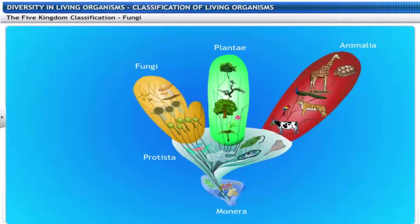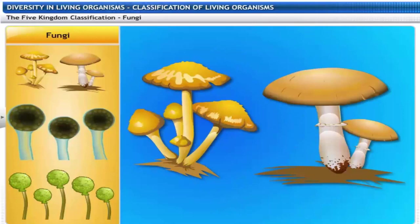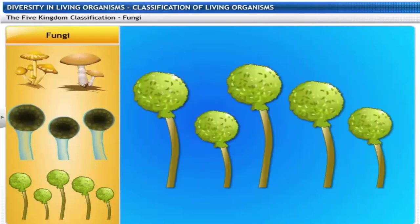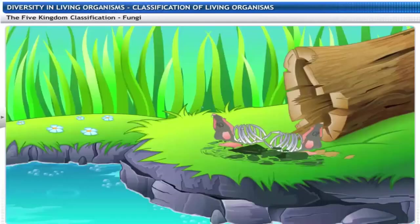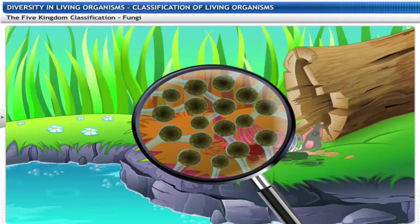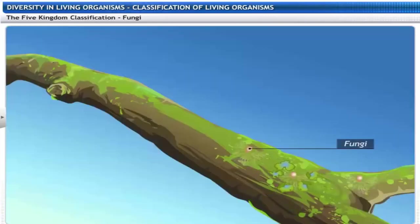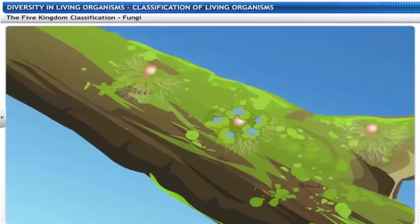The next kingdom, fungi, includes mushrooms, Rhizopus and Mucor. These organisms are not plants and are not capable of performing photosynthesis. Most fungi are multicellular and eukaryotic. They have cell walls made of a tough complex sugar called chitin. Fungi decay dead plants and animals to derive their food, hence the name saprophytes.